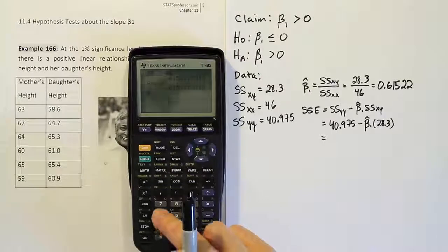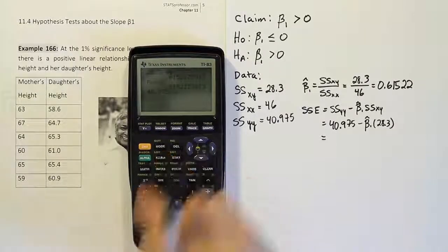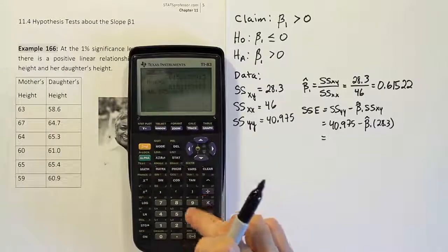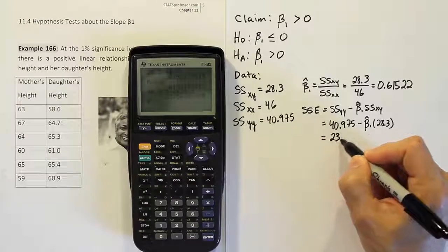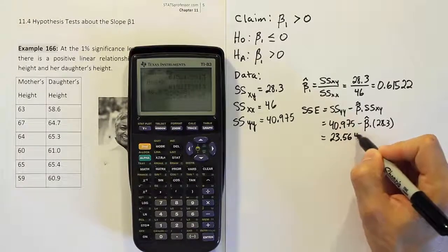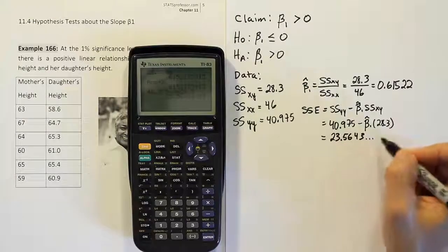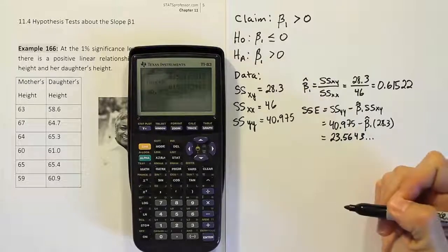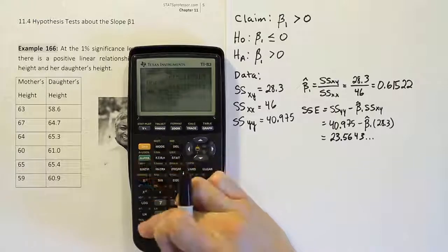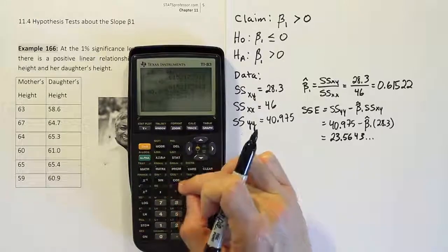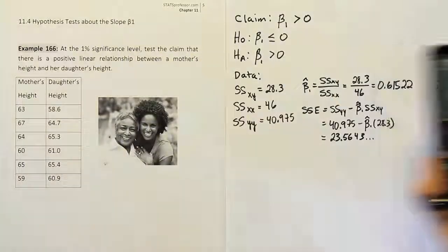So remember, I have that number in my calculator β₁ hat. So 40.975 minus, I stored that number as x, and then I'm going to multiply by 28.3. Once I'm done, I get the answer 23.5643, etc. Right? It's going to keep going from there, so I'm just going to dot, dot, dot it. But that number, that SSE, I'm going to store in my calculator again, so I don't have to use any rounding. So I'm going to store that in the, in this case, I'm going to use E for the variable. So SSE, I'll use E for that. Okay, so I'm just doing that so I don't have to round it later on.